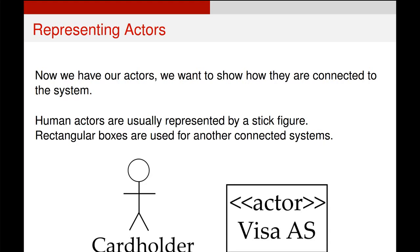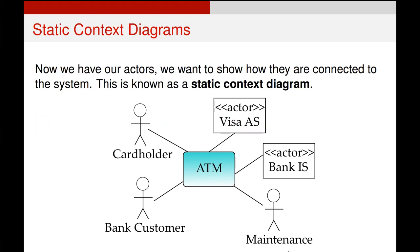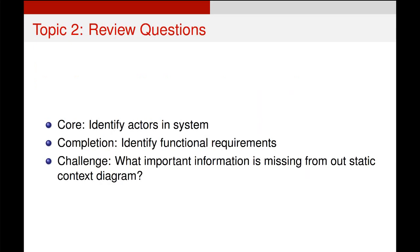Human actors in use case diagrams are depicted by stick figures, and additional automated systems like authentication systems are depicted by square boxes with the word 'actor' written in them and the name of the system. We can start to put these out in what's called a static context diagram, which just shows what our actors are, what our systems are, and how they connect. This isn't so useful on its own, but it's a great stepping stone to our use case diagram, which will be the topic of the next video.